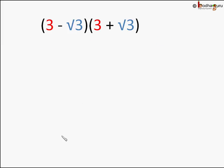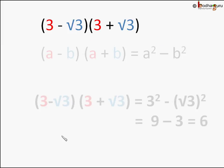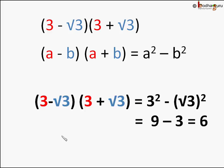We can solve this problem another way. Do you remember the algebraic identity (a plus b) into (a minus b) equals a square minus b square? If we think of 3 as a and square root of 3 as b, we can see it is in the form of (a plus b) into (a minus b), so its answer should be a square minus b square — that is, 3 square minus (square root of 3) whole square. So 3 square is 9, and square root of 3 squared is 3, giving us 9 minus 3, which is 6.